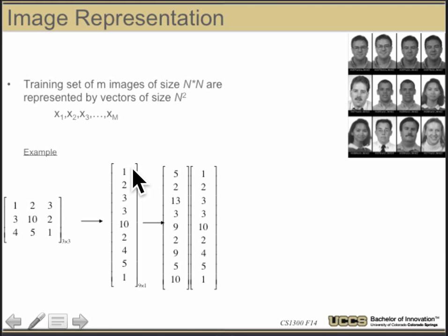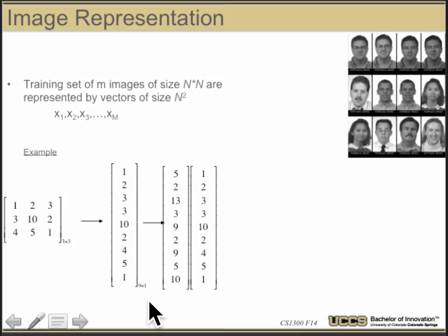I'm going to start stacking up the matrix values — 1, 2, 3, 3, 10, 2 — and that gives me a column vector, so I can think of every image as a vector. If I have an n by n image, the vector is of size n squared. If I have an n by m image, it's n times m.